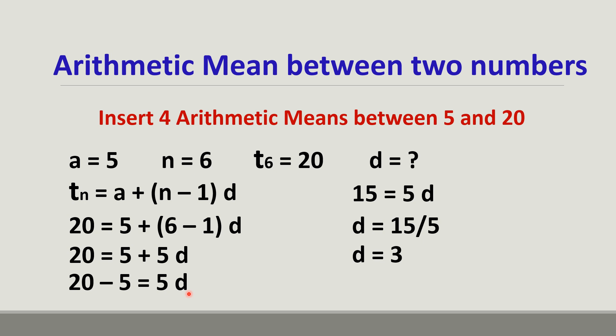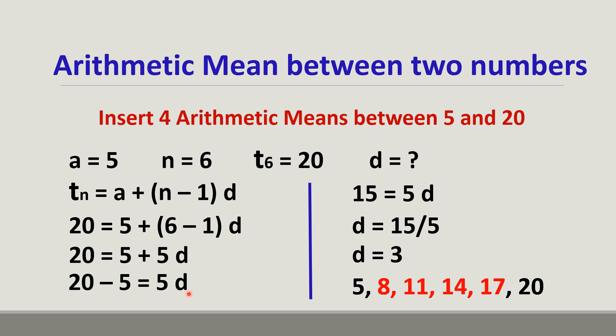So the given first term is 5. The number that has a common difference of 3 from 5 will be 8. So the numbers to be inserted between 5 and 20 are 8, 11, 14, 17. These are the arithmetic means inserted between 5 and 20, and the total number of terms in this arithmetic progression will be 6, including the 4 inserted arithmetic means and the first and last terms.